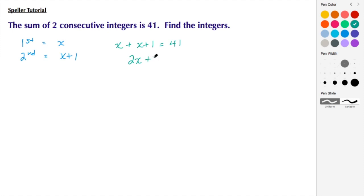X plus X gives us 2X, then we bring down the plus 1 and the 41. We end up subtracting 1 from both sides, and doing that, these ones here cancel and we're left with 2X equals 40.